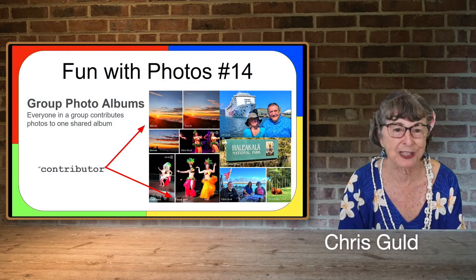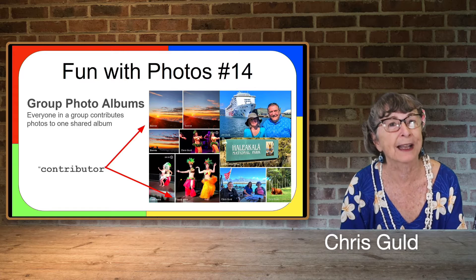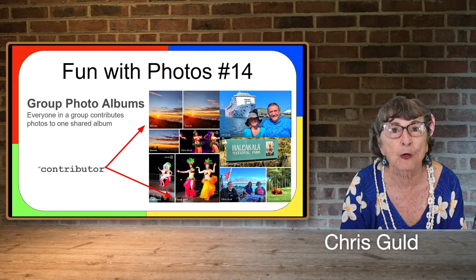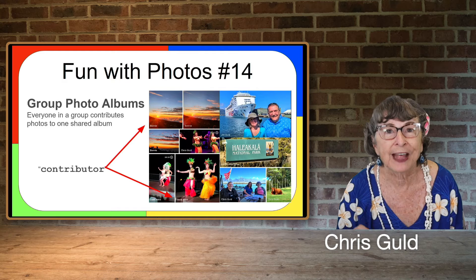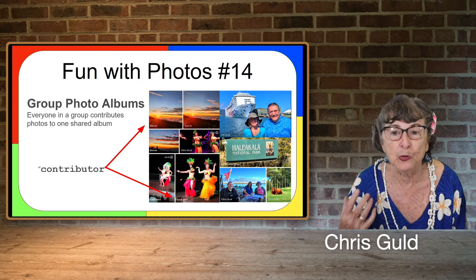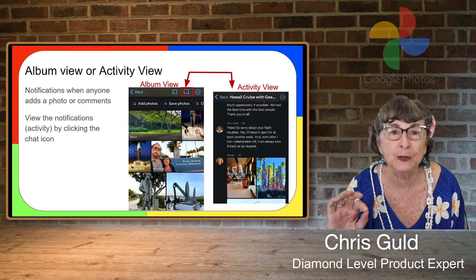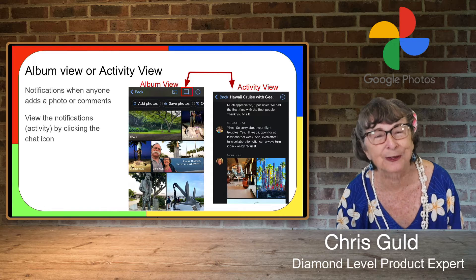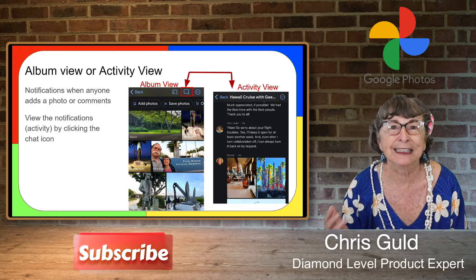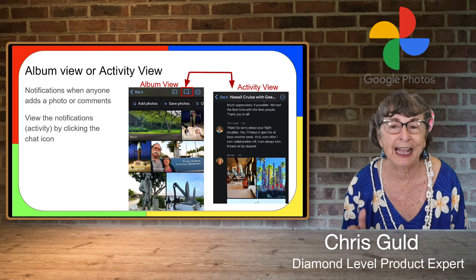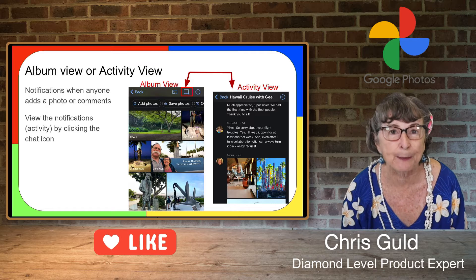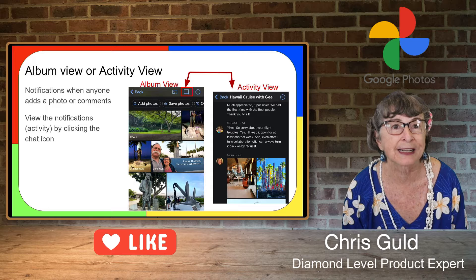Hello everybody, I'm Chris with Geeks on Tour and I'm Jim. This is Fun with Photos. We had a lot of fun with photos last week because we were in Hawaii and there was a group of us. Today I'm going to talk about what group photo albums are and how they work. In Google Photos you have your choice of looking at either the album view, which shows all the photos in date order, or the activity view, which shows you the latest thing that happened on the album - be it a new photo from somebody, or a comment or a like.